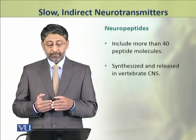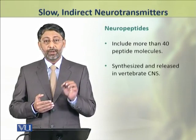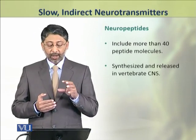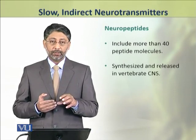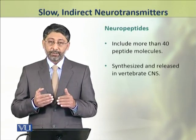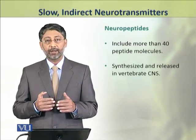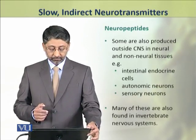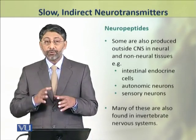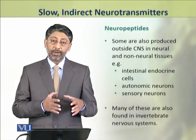Now we shall discuss neuropeptides, the second group involved in slow and indirect neurotransmission. There are about 40 or more neuropeptides involved in neurotransmission. They are synthesized and released in the vertebrate central nervous system. Some neuropeptides are also produced outside the central nervous system by non-neural tissues.